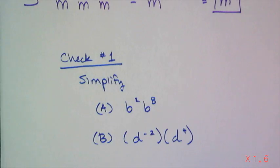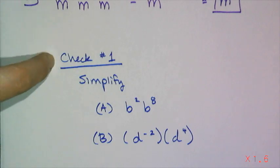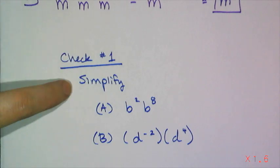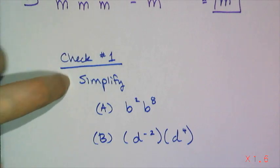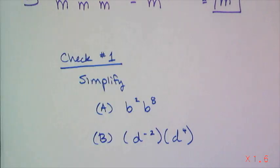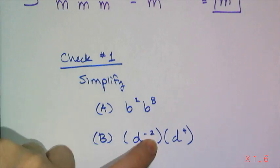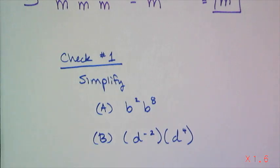So now let's see if you can do very simple problems with this property on your own. Check number one: simplify b squared times b to the eighth. And simplify d to the negative two power times d to the fourth.